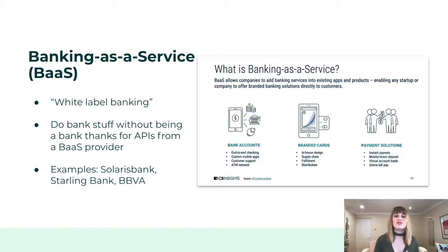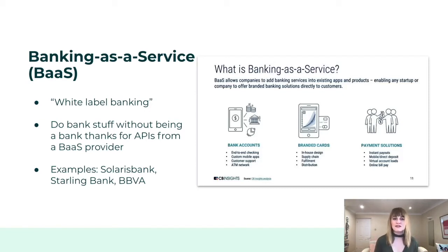So when someone applies for a furniture store loan on the furniture website, the furniture store is really just communicating with the bank's server APIs and web hooks, and otherwise just existing as an interface. That's why banking as a service is commonly known as white label banking. Banking as a service simply allows a non-bank to do banking things without needing to become a bank. For non-banks, this is awesome — it means opening up new revenue streams and offering better or more innovative customer experiences.